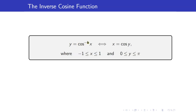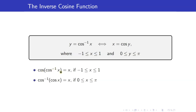Cosine inverse of a number between negative 1 to 1 gives us an angle between 0 to pi such that the cosine of that angle equals that number. Since they are inverses of each other, we have these properties: cosine of cosine inverse x equals x, and cosine inverse of cosine x equals x. Look at the outermost function — if it is cosine, the answer is in negative 1 to 1; if it is cosine inverse, the answer is an angle between 0 to pi. You must memorize this.